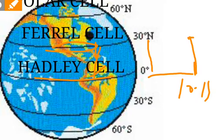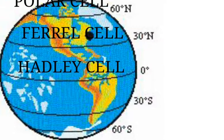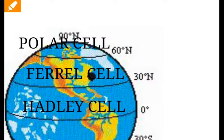After sinking down to the surface at 30 degree latitude, the winds will again move towards the equator. This way a cell is formed — it is called the Hadley cell. Similarly, other cells are also formed at lower latitudes.